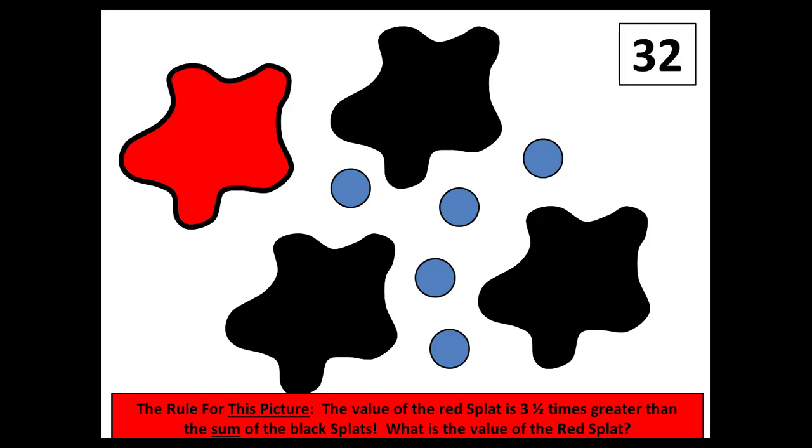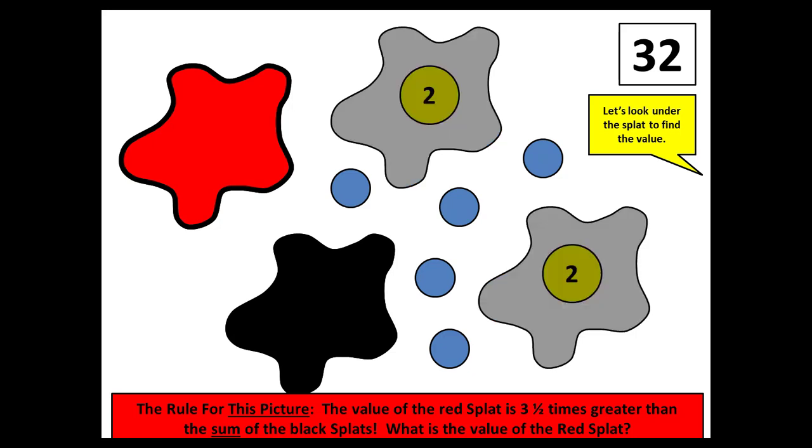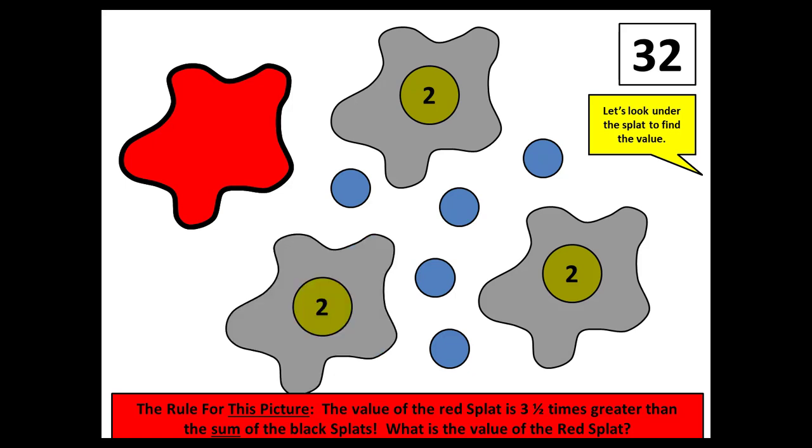Like all the other levels, it's the same routine. What is the value of the red splat? How do you know? How else could you know? Let's look under the splat to find the value. And then when it's time, there is the reveal. Remember that the black splats are revealed first. In this case, the value of each one is two. Finally, the value of the red splat is revealed. In this case, it's 21. 21 is three and one half times greater than six.